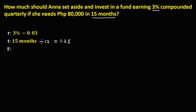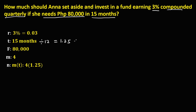For the future value, since Anna needs to have 80,000 pesos, the future value is 80,000 pesos. Then for the compounding period, since it's compounded quarterly, that's 4 times in a year, so M is equal to 4. For the number of periods, that's M times the time — 4 times 1.25 — so the number of periods is equal to 5.